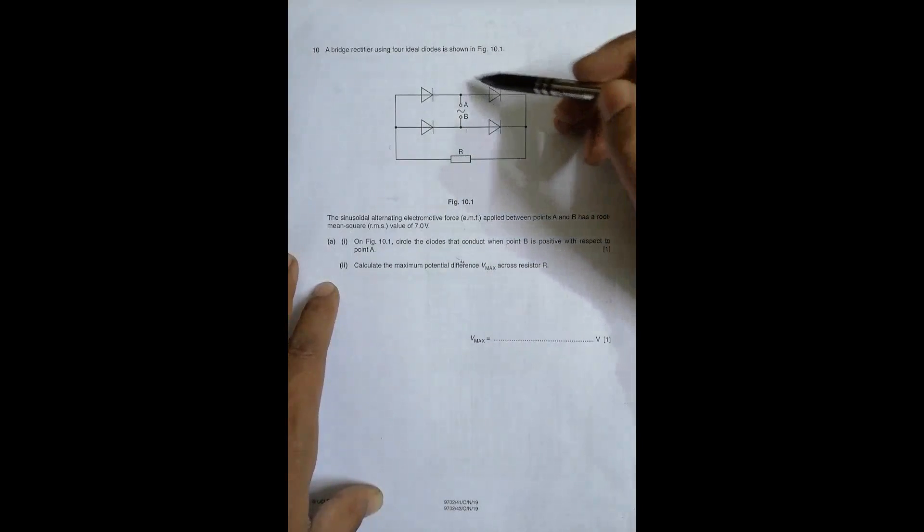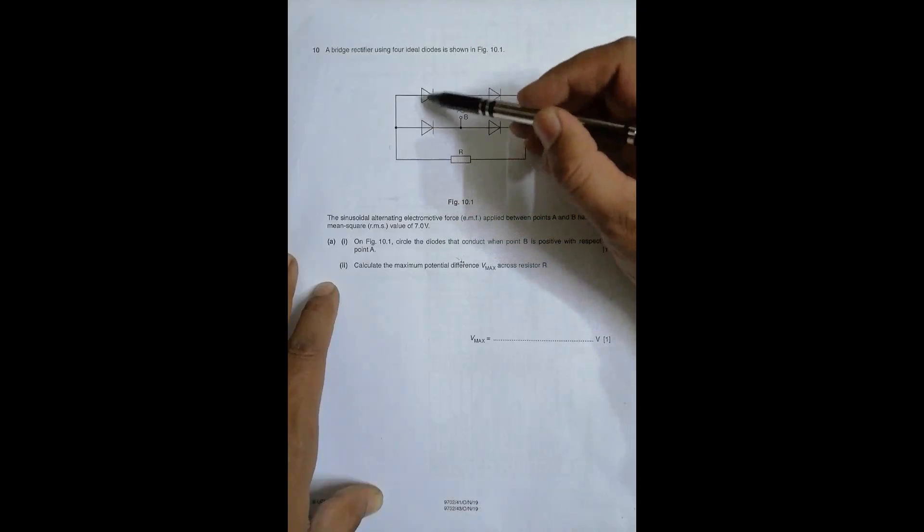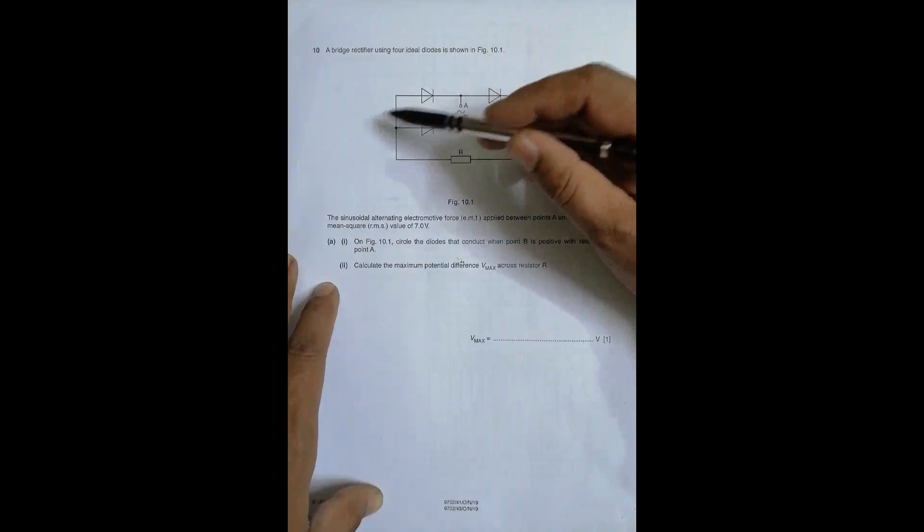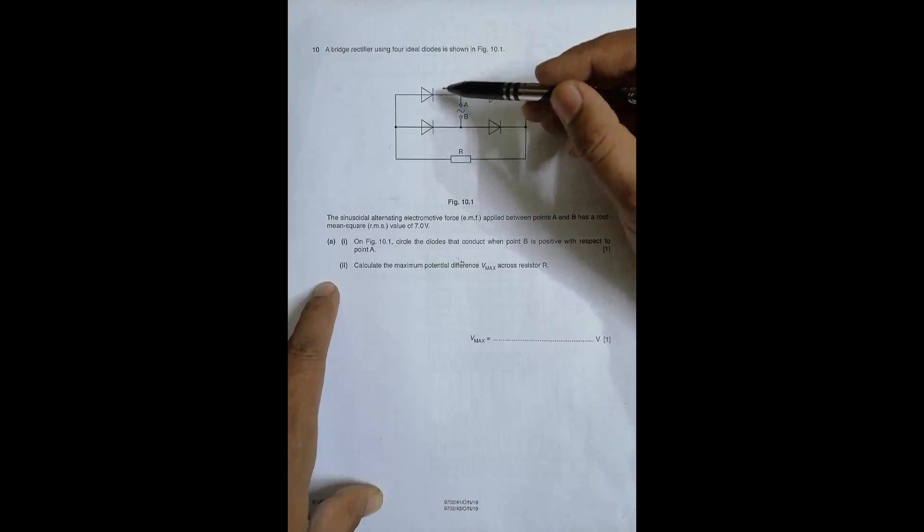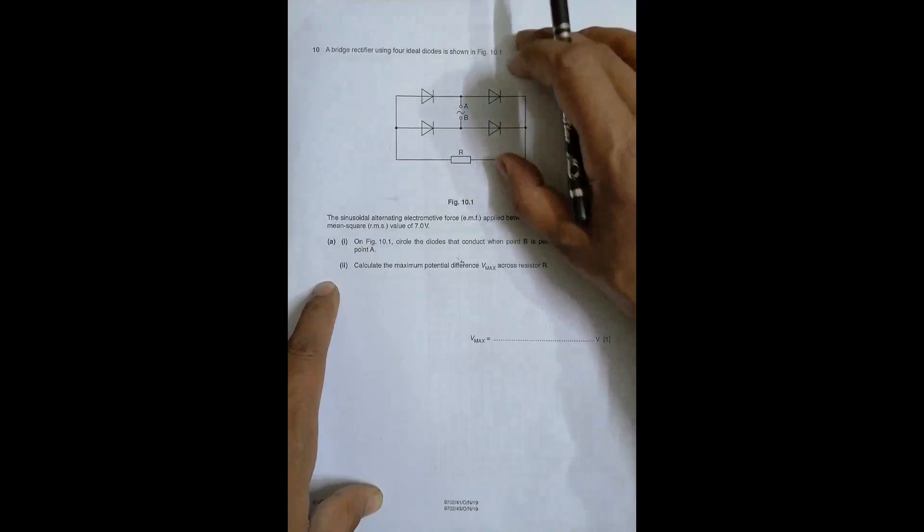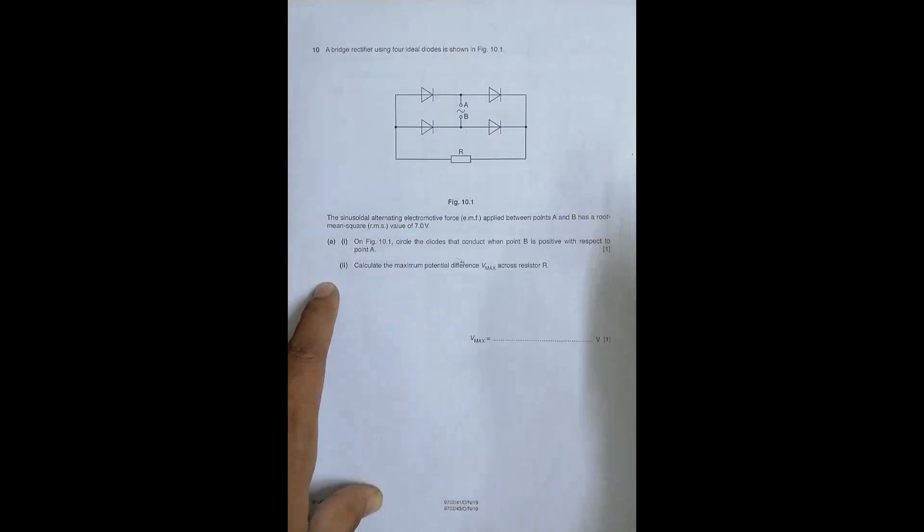So what I mean is we have got four diodes here. The N sides of these two is connected to one end of the resistor and the P sides of the remaining two are connected to the other end of the resistor. And for the terminals of the source, the terminal A is connected to P side and N side of two diodes. And the other terminal is also connected to P side and N side of the diodes. So whatever be the shape, the arrangement is same.